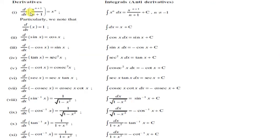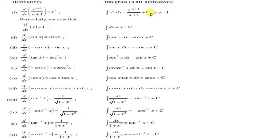यहाँ हमारे पास कुछ formulas हैं — एक side हमने derivative के formula लिखे हैं, उससे corresponding हमने integration के formula बनाए हैं, that is anti-derivative। d/dx of [x^(n+1) / (n+1)] = x^n, क्योंकि (n+1) cancel होगा। इसलिए integration of x^n = x^(n+1) / (n+1) + c. This constant is called the constant of integration.